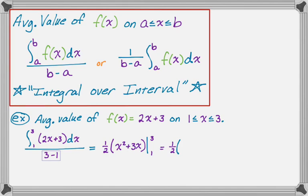That'll be 3² = 9, and 3 times 3 = 9, so 9 + 9. Then minus, because we're using the fundamental theorem, I substitute 1 and get 1 + 3. So the quantity (1 + 3). That's 18 - 4 = 14, divided by 2 is 7. So that's the average value of 2x + 3 on the interval from 1 to 3.